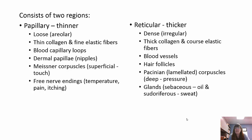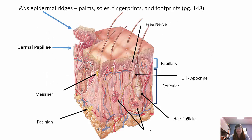The reticular layer is thicker, made of dense irregular tissue with thick collagen fibers and coarse elastic fibers — very strong and resilient with stretch and recoil. Blood vessel innervation and hair follicles originate here. We have Pacinian corpuscles, which allow us to sense deep pressure, and glands here: sebaceous (oil glands) and sudoriferous (sweat glands). You can see the dermal papillae pushing up into the epidermis, giving us our fingerprints and footprints.